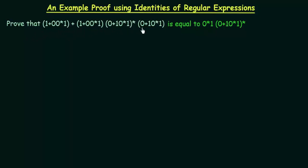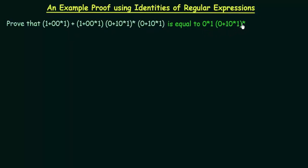We have to prove that these two regular expressions are equal. The first one is (1 + 0·0*·1 + 1 + 0·0*·1·(0 + 1·0*·1))* · (0 + 1·0*·1), and we have to prove that this is equal to (0·1·(0 + 1·0*·1))* whole star.